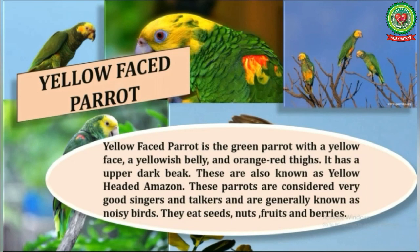Number three is Yellow-faced Parrot. The Yellow-faced Parrot is a green parrot with a yellow face, a yellowish belly, and orange-red thighs. It has an upper dark beak. These are also known as Yellow-headed Amazon. These parrots are considered very good singers and talkers and are generally known as noisy birds. They eat seeds, nuts, fruits, and berries.